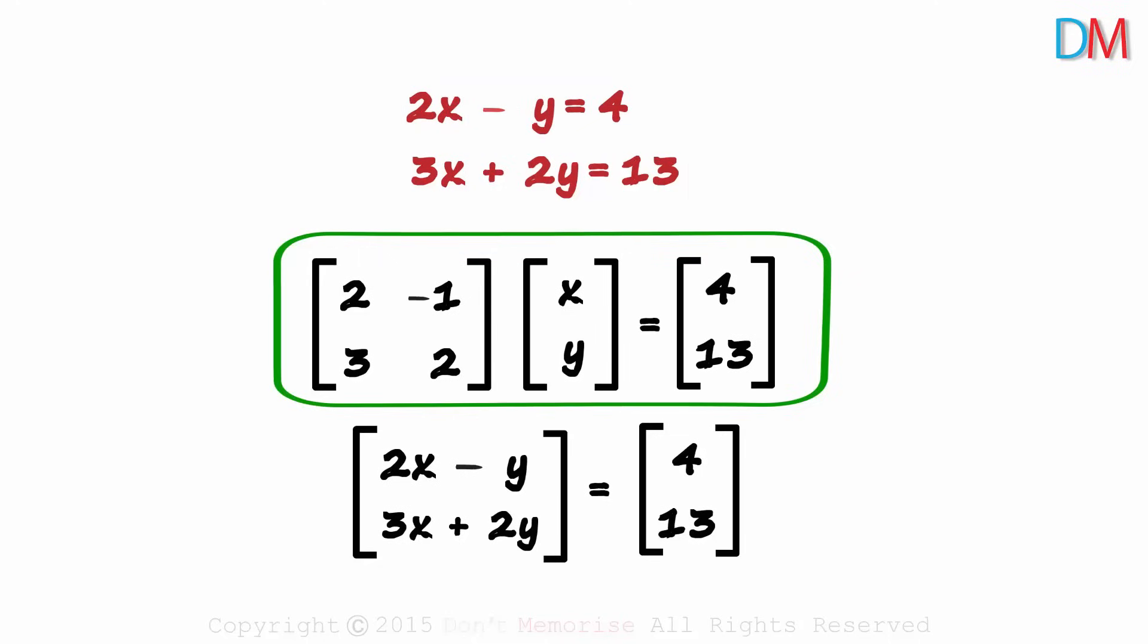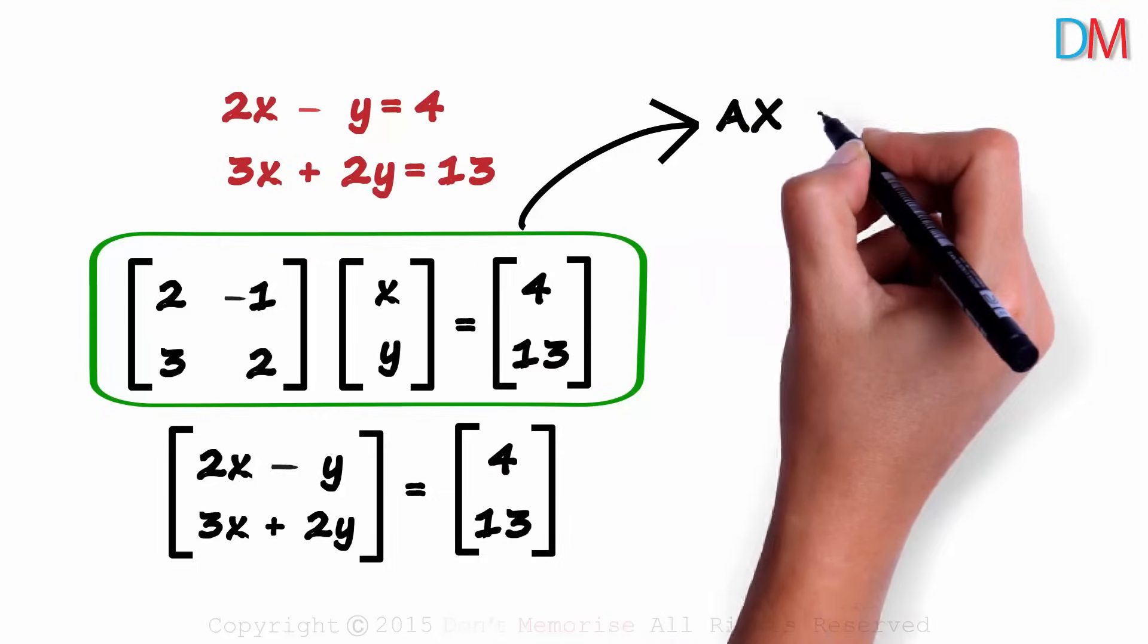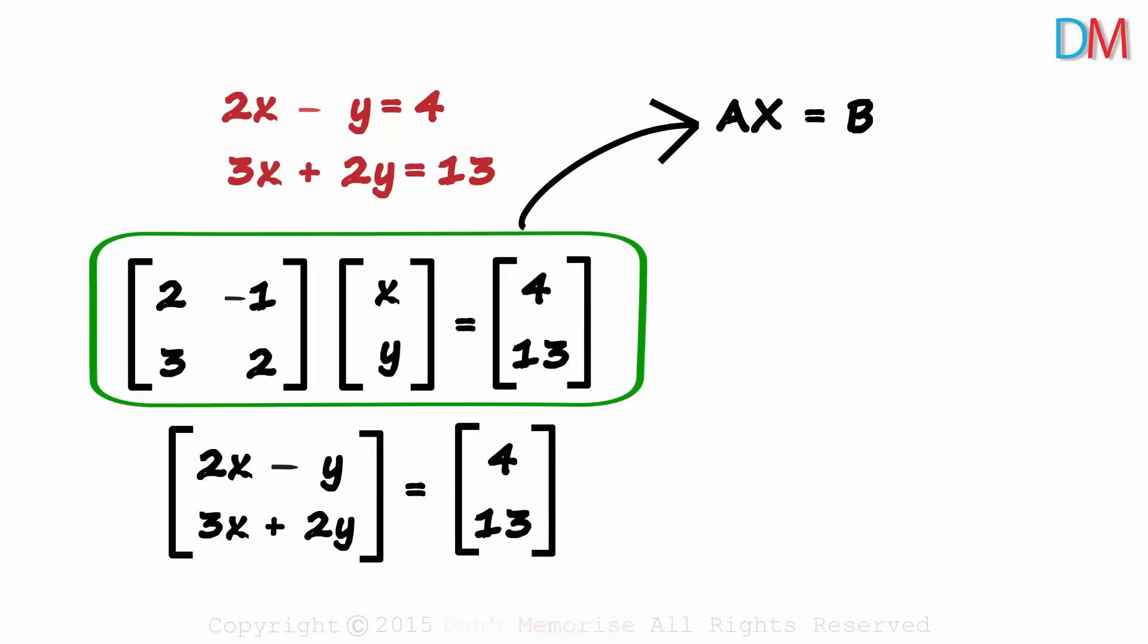But let's come back to the important point. How does writing it in matrix form help us solve the equations? Let's see that on the right hand side. This can be written as A times X is equal to B. We have called this one matrix A and this matrix X and this matrix B.